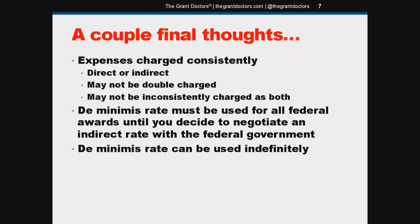Once you choose to use the de minimis rate, you have to use it on all of your federal grant awards until you decide to negotiate an indirect rate. But it can be used indefinitely before you take the plunge with a formal indirect cost rate proposal — there's no sense of urgency or rush to work on that. You have this option that can be used indefinitely until you're ready.